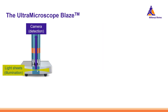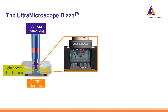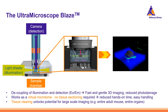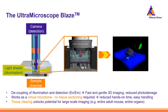In the Ultra Microscope Blaze, the process of generating a 3D image involves illuminating optically cleared samples from the side while capturing the signal using an objective above, as illustrated in the left panel. Within the imaging chamber, a thin sheet of light is used to illuminate a fluorescently stained and cleared sample. To construct a complete 3D image, the sample is gradually moved through the sheet of light. By capturing a series of images at different depths, a Z-stack is obtained, then the images are processed and rendered into a comprehensive 3D representation.